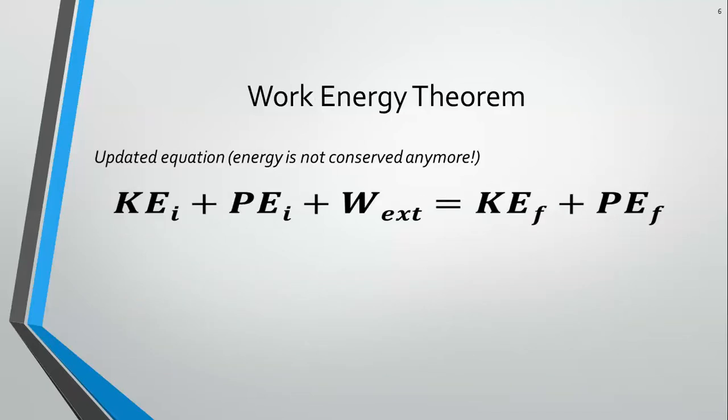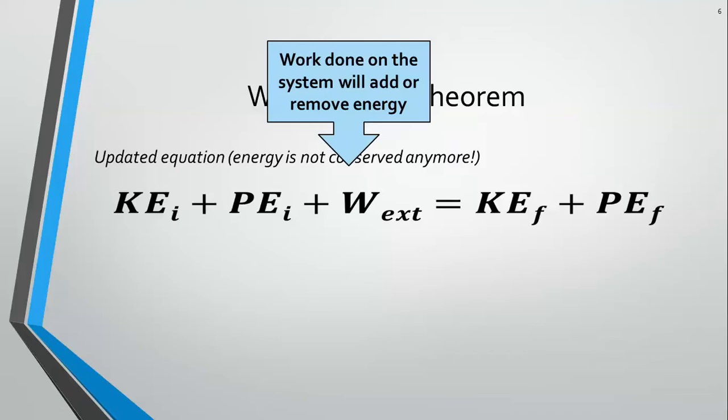So we started with, we used to have this initial energy, kinetic energy plus initial potential energy equals final kinetic energy plus final potential energy. Now we're adding work to the system. The energy is not going to be conserved anymore. This work that we add on the left-hand side, the work done on the system is going to either add or remove energy from the system. So what we have, this total is not going to equal this total because now we've added something new on the left-hand side.